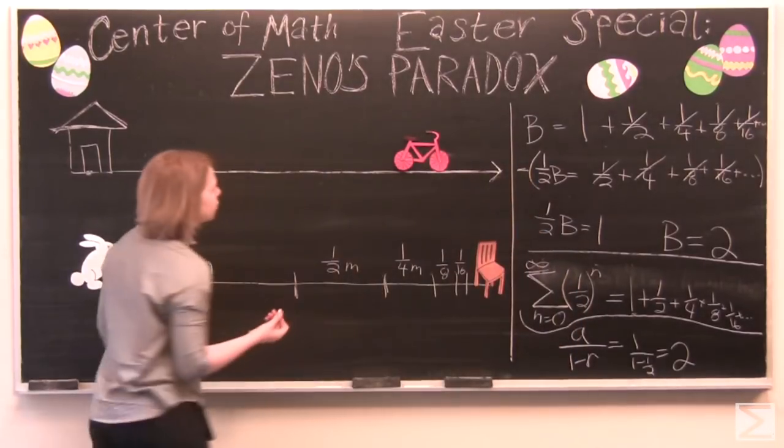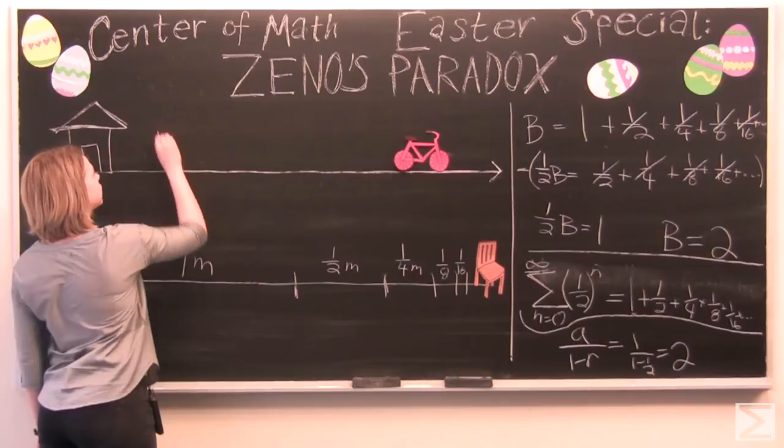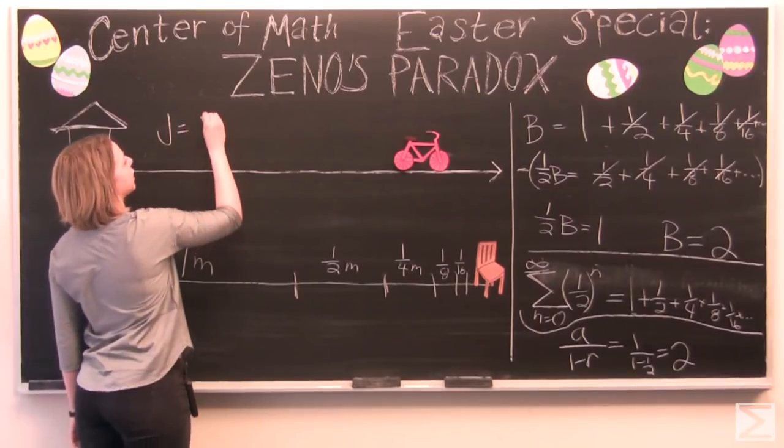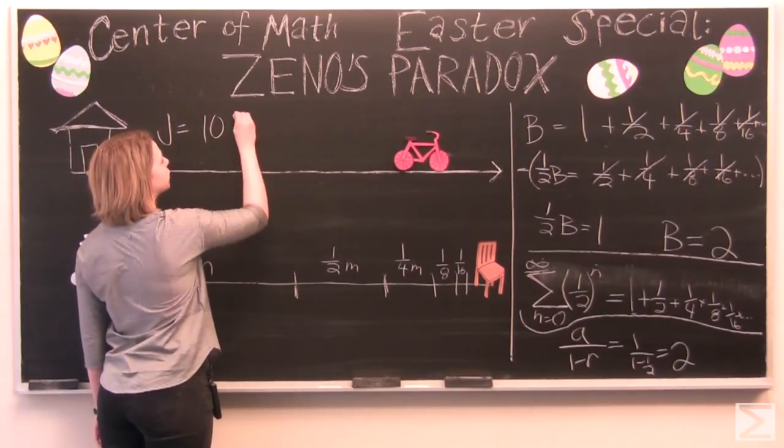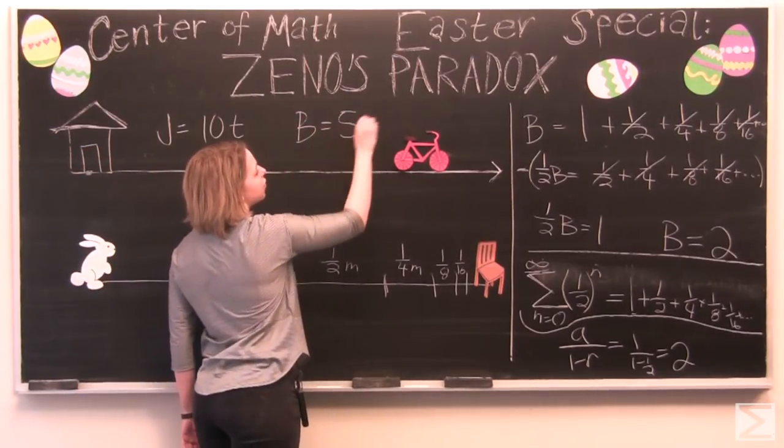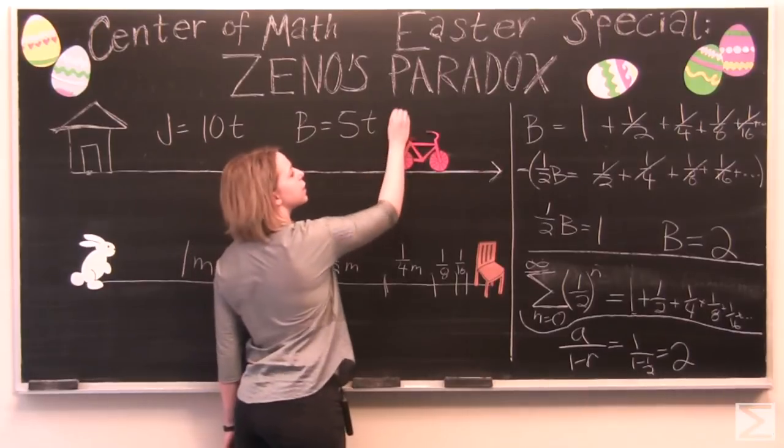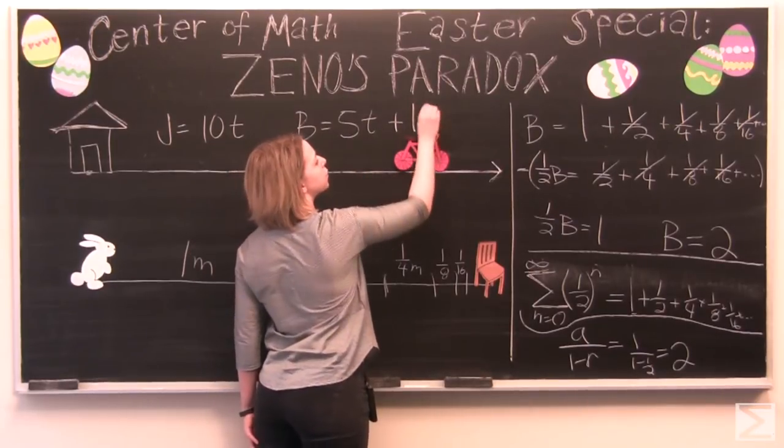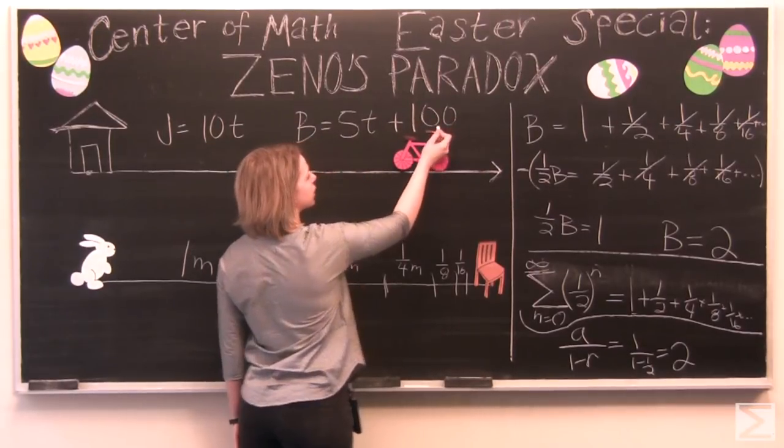But if we say that John is traveling. So John is traveling at 10 meters per second. We use T for time. And our bunny is traveling at 5 meters per second. But the bunny had the head start, remember? So he's already traveled 100 meters.